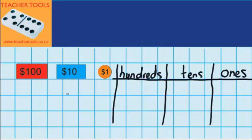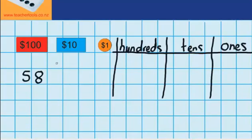Let's start with this question. Let's imagine I've got $58 in my bank account. I want to see what that looks like using these materials. Looking at $58, I can see that $58 is made up of eight $1 coins, so I'm going to move those over here first.